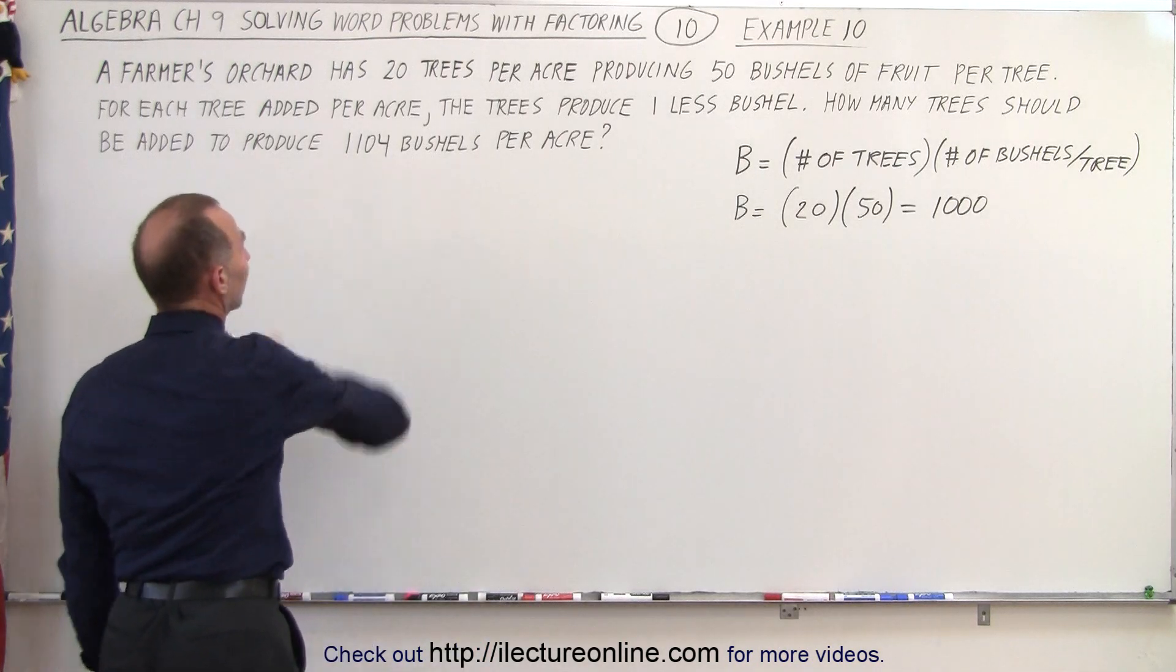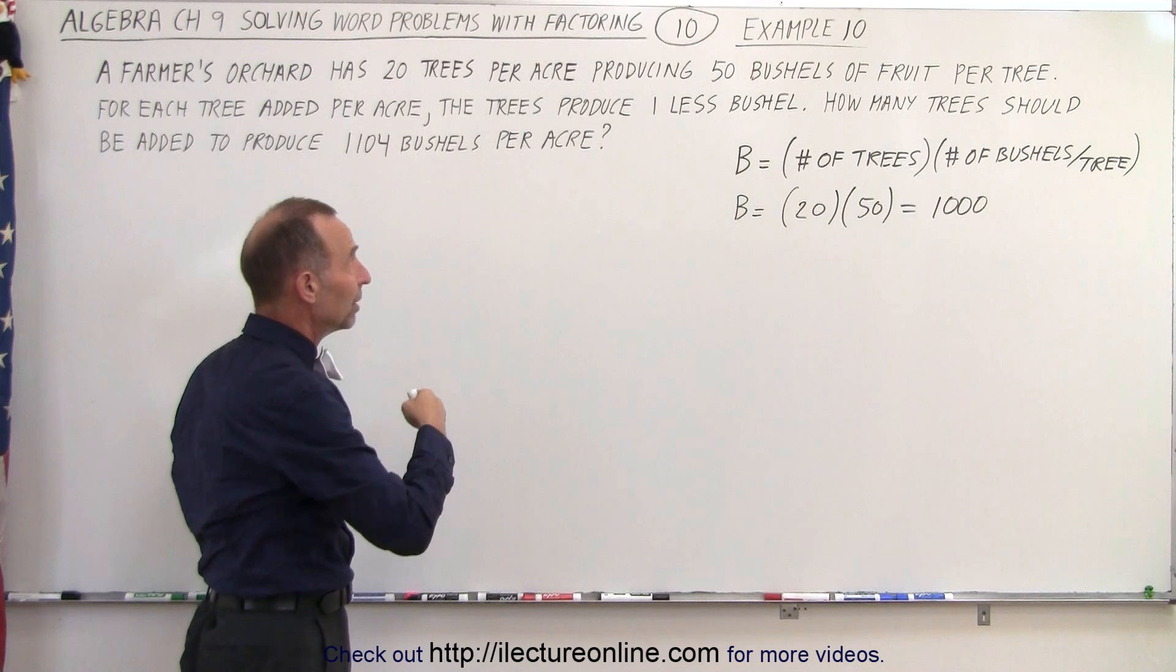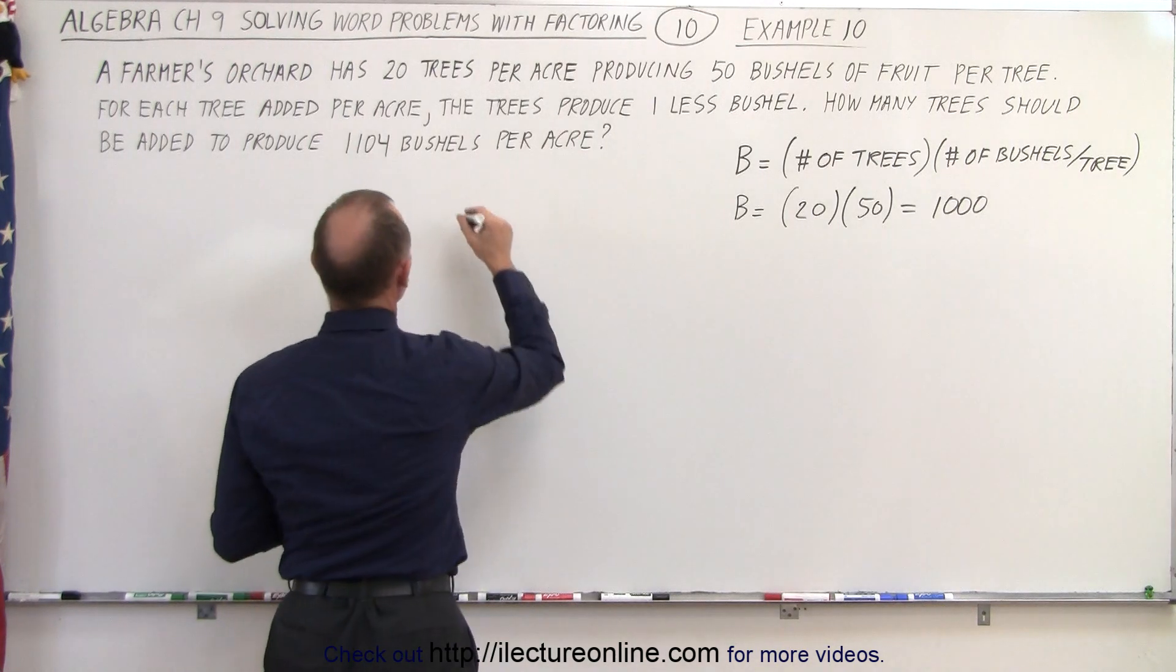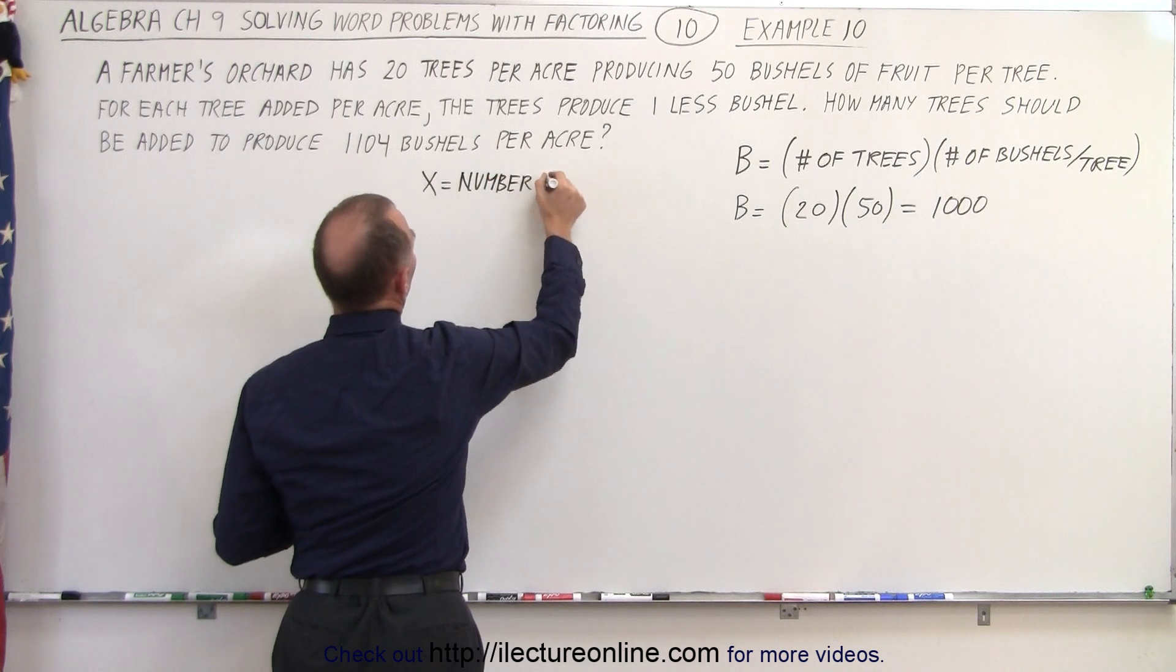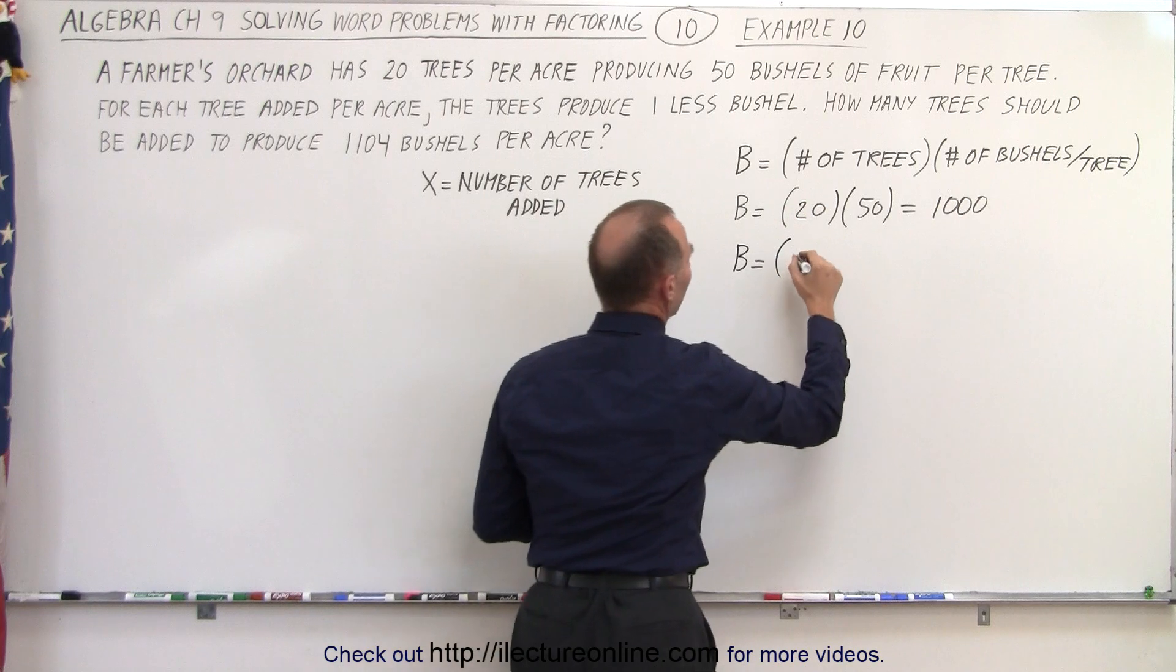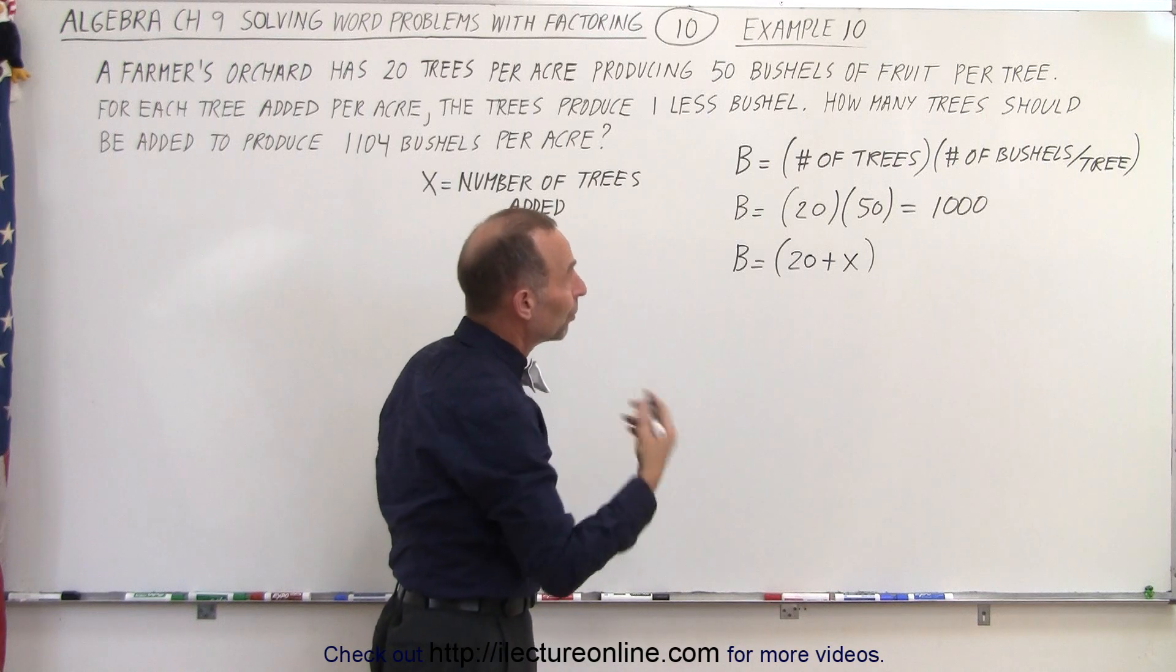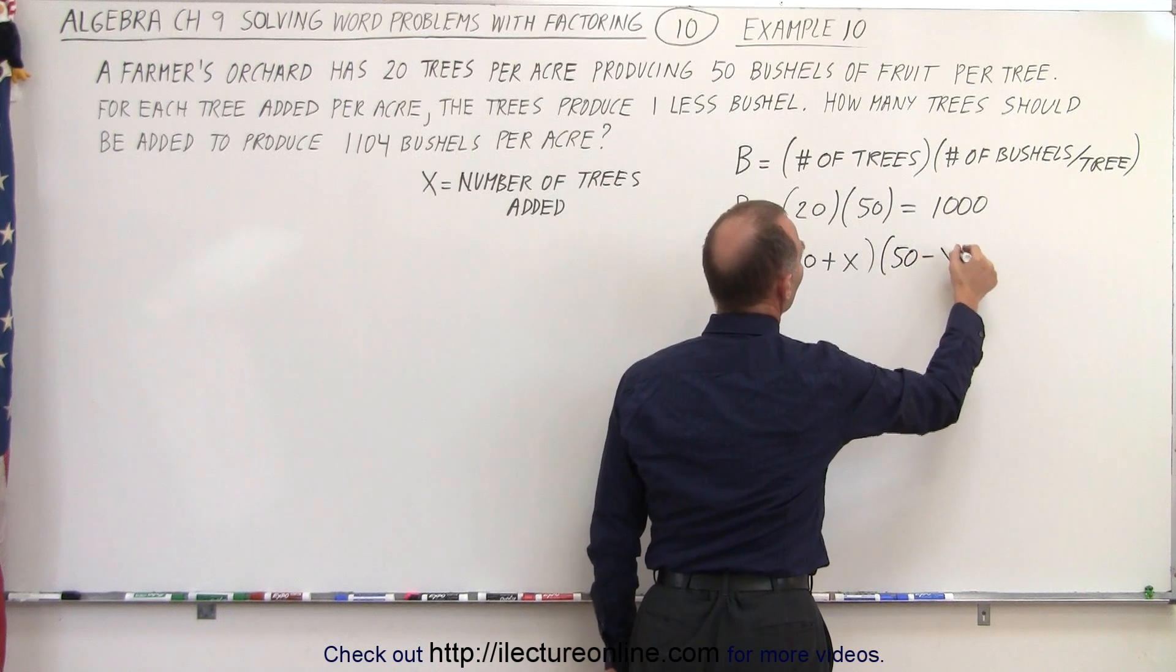Now we want to increase that to 1,104 bushels. So we can do that by adding more trees. Of course, when we add more trees, then each tree will produce less bushels. So we can see here that if x equals the number of added trees, then the new number of bushels produced will be equal to the number of trees, which will now be 20 plus x, because now we have this many trees per acre. And we want to multiply times the number of bushels per tree, which now will be 50 minus x.